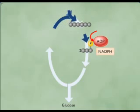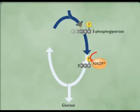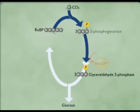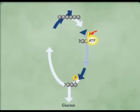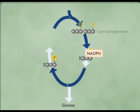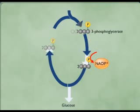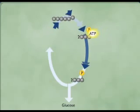To generate an entire new glucose molecule, the cycle has to turn several times, because each turn of the cycle adds only one carbon atom from each molecule of carbon dioxide.